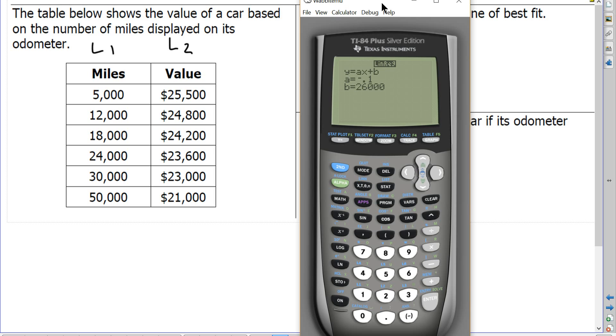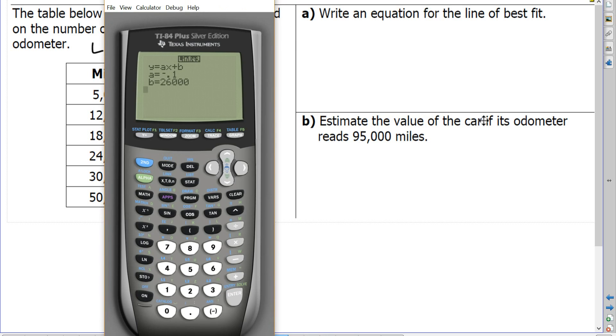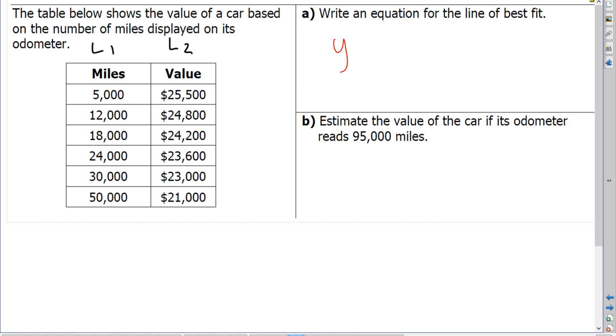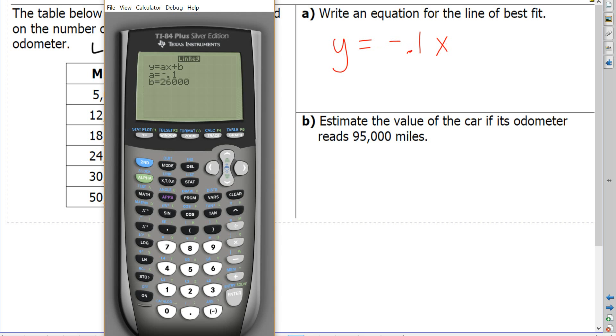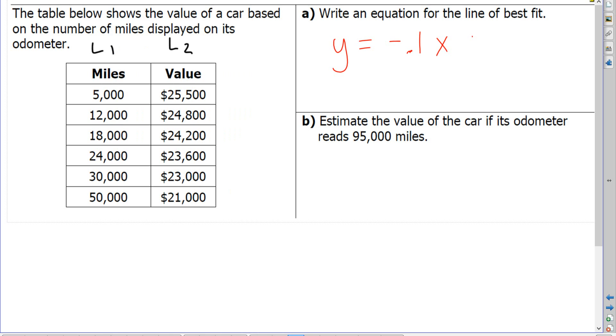So a is equal to negative 0.1, and b is equal to 26,000. So when I write my equation over here, I'm going to put a negative 0.1 in my a position, and in my b position, I'm going to put a positive 26,000. So that is the line of best fit, or the regression equation.